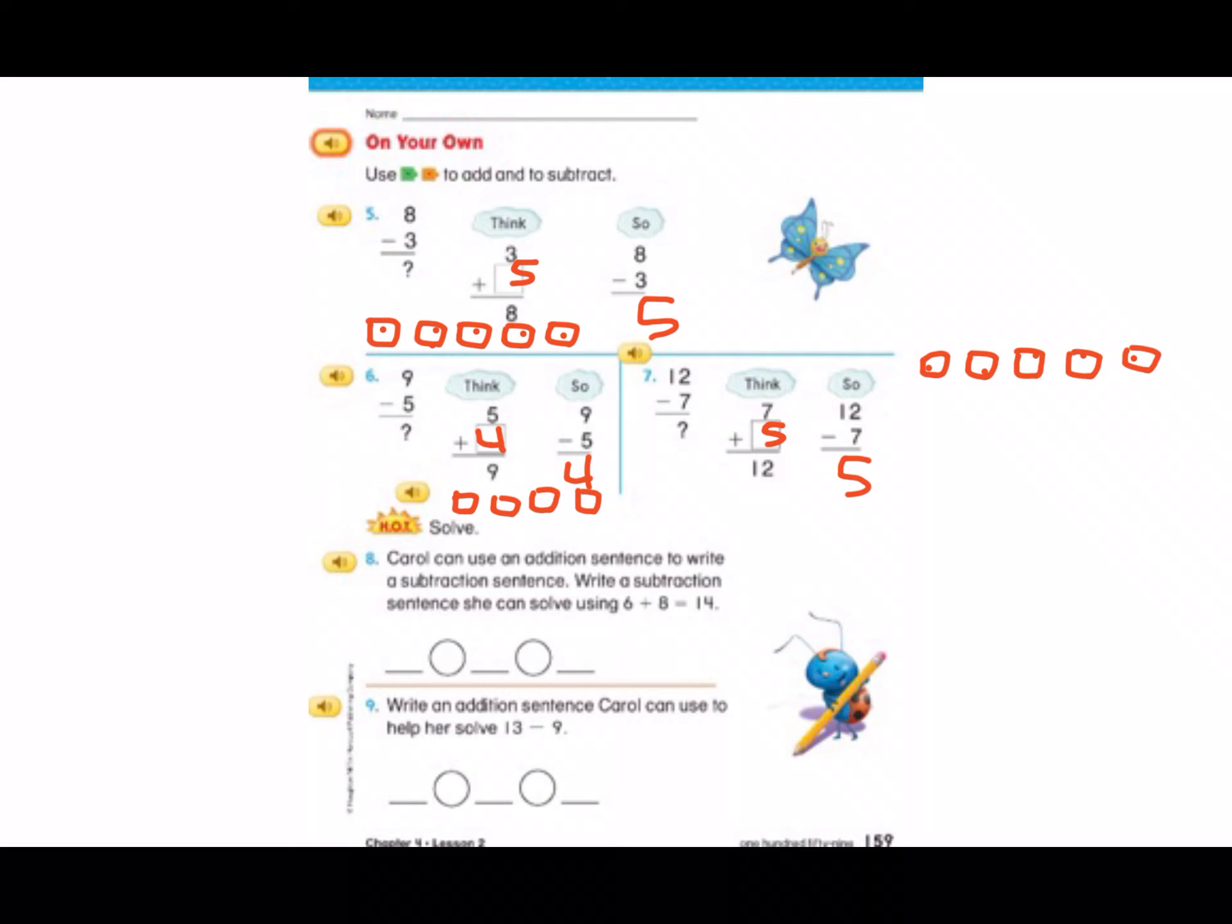Look at number 8. Carol can use an addition sentence to write a subtraction sentence. Write a subtraction sentence she can solve using 6 plus 8 equals 14. Okay, you have two options. We could say 14 minus 6 equals 8 or 14 minus 8 equals 6. Either one of those is correct.